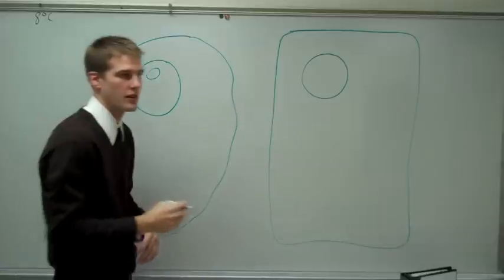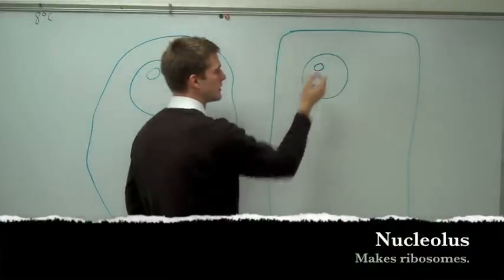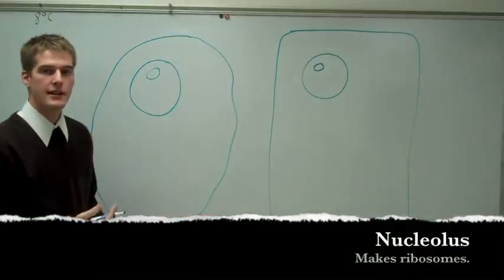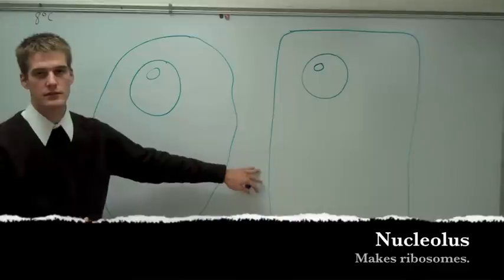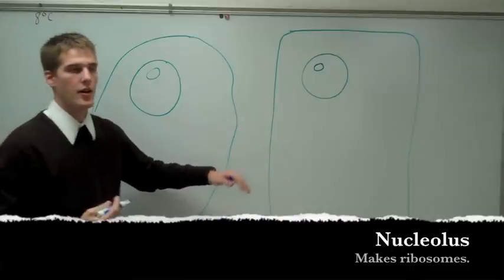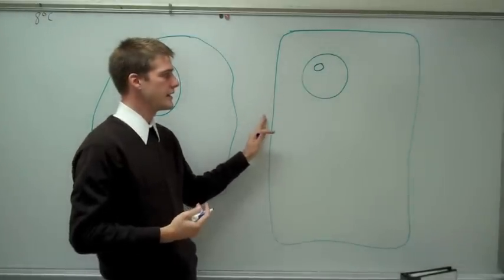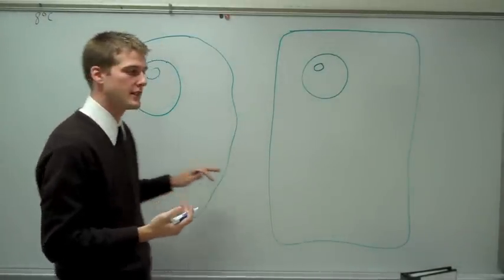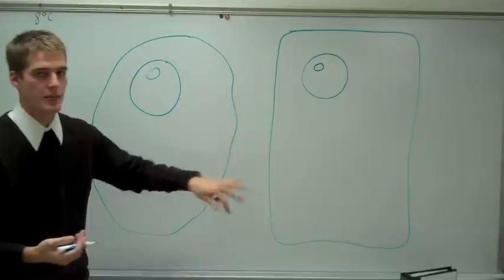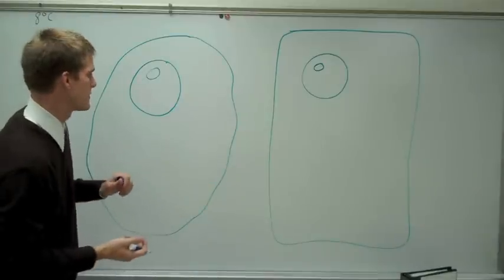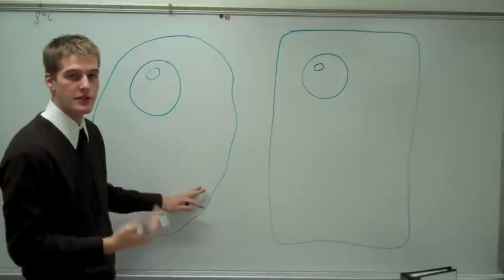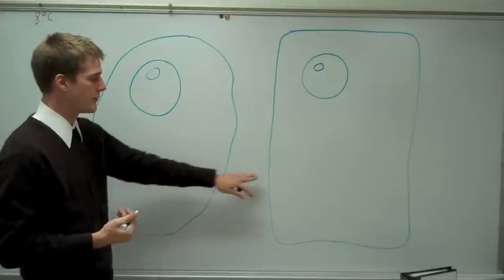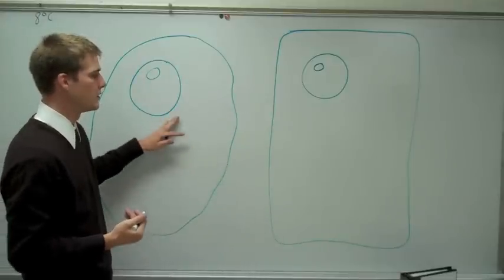Within the nucleus there's another organelle called the nucleolus. All the things that a plant cell and an animal cell have in common are going to be blue. If I have something in a plant cell that's not in an animal cell it's going to be red, and if it's in an animal cell and not a plant cell it's going to be brown.